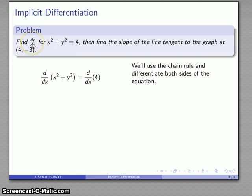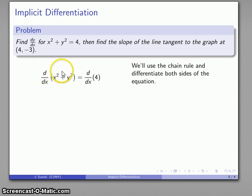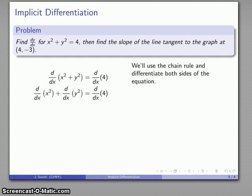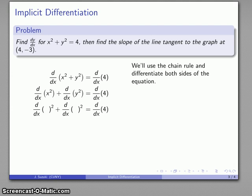I want to find the derivative with respect to x, so I differentiate both sides. On the right-hand side, the derivative of 4 is no problem. On the left-hand side, I have x squared plus y squared — that's a sum, so the derivative of a sum is the sum of the derivatives. Applying the chain rule: the last operation in each term is squaring, so the derivative of a square is 2 times the inside times the derivative of the inside.